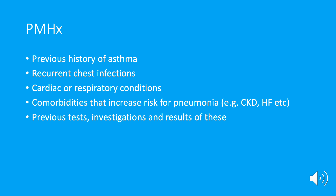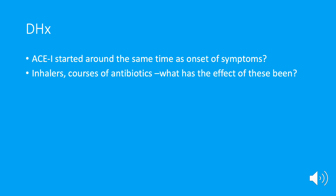Ask about ankle oedema as well. For past medical history: have they had childhood asthma, recurrent chest infections, other lung or heart conditions? Do they have comorbidities causing immunosuppression — chronic kidney disease, heart failure, HIV, or immunosuppressant drugs for rheumatoid arthritis? All of those increase risk for pneumonias and chest infections. This is also a good place to ask about previous tests and investigations — have they been given a trial of an inhaler, had a chest X-ray, peak flow, or spirometry, and what were the results?